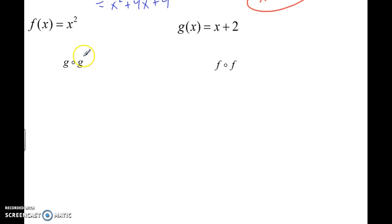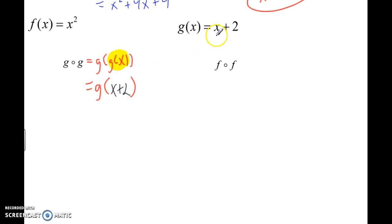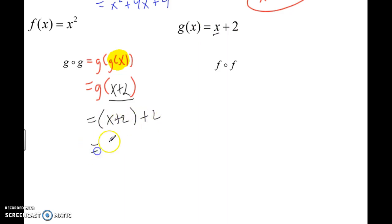Let's finish this out. This would be G of G of X — again, we're not putting a number in, just the variable X. G of X is X plus 2. So evaluate G of X first: G of X is X plus 2. Now everywhere there's an X in the G function, plug in X plus 2: that gives X plus 2 plus 2, which simplifies to X plus 4.